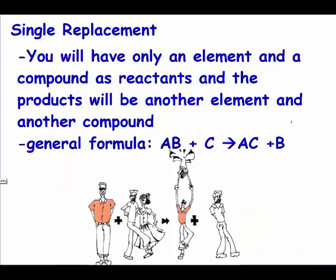In single replacement reactions, you have an element all by itself and you have a compound. That element by itself is going to try to cut into this compound and replace that element in the compound. If it can, then we have another element off to the side and a new compound. So it's element plus compound yields element and compound.